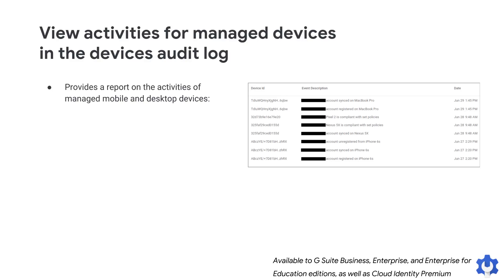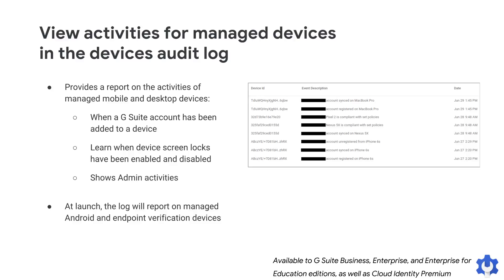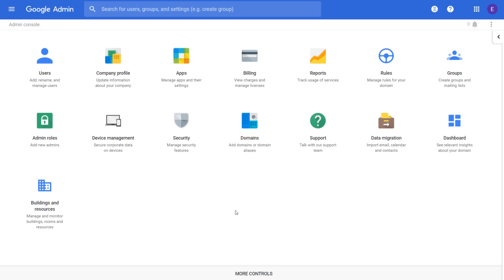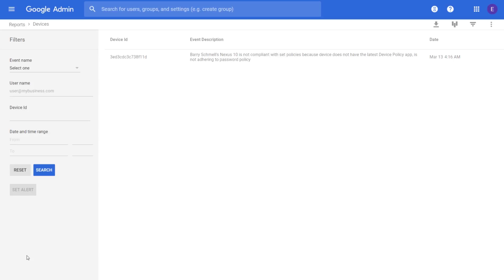The Device Audit Log in the Admin console provides a report on the activities of managed mobile and desktop devices in your organization. We're now showing some of the events in this report to G Suite Business, Enterprise, and Enterprise for Education customers with basic mobile management and endpoint verification enabled as well. You can now find out when a G Suite account has been added to a device and learn when device screen locks have been enabled and disabled. In addition, the device's audit log will now contain admin activities like when an account wipe has been requested or executed. At launch, for basic mobile management and endpoint verification customers, this report will only show events on managed Android and endpoint verification devices. You can find this report in the Admin console by going to Reports and on the left side under Audits, click Devices. To learn more, check out our Help Center.